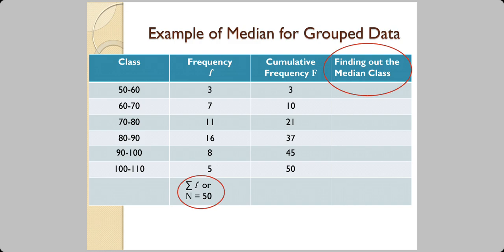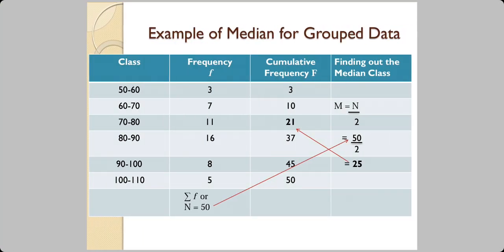Continuing: 3, 3+7=10, 10+11=21, and so on. The cross-check is that the last cumulative frequency should equal the total frequency — in this case 50 appears in both places, confirming the cumulative frequency is correct. The next important step is to find the median class using n/2 = 50/2 = 25.